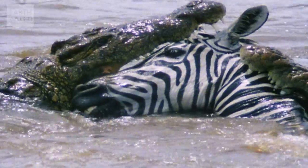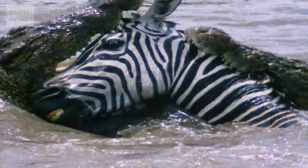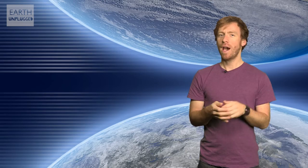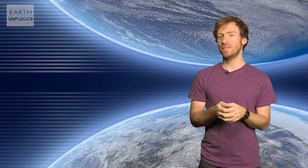First up, crocodiles, famous for tearing open zebra and grabbing wildebeest from the banks of rivers. However, recent research has shown that crocodilians have an altogether more sensitive side, or rather sides of their mouths.